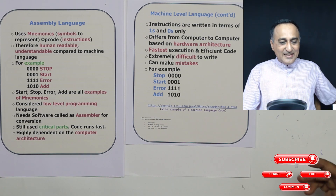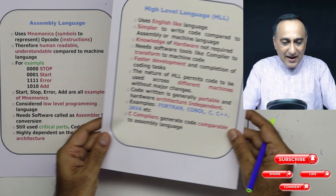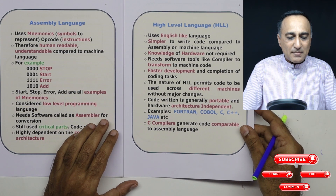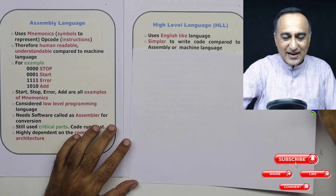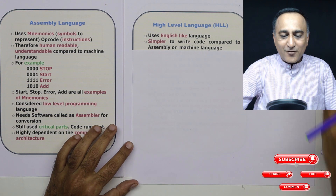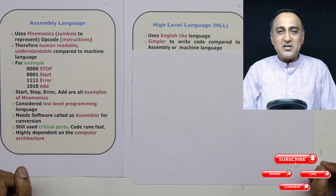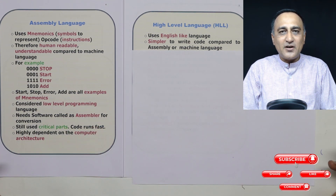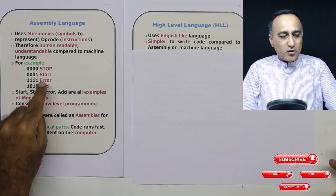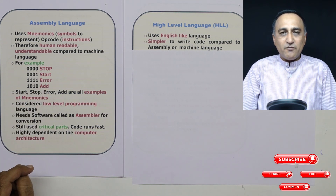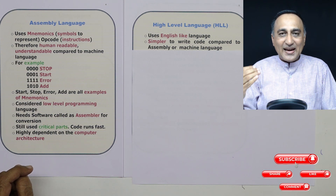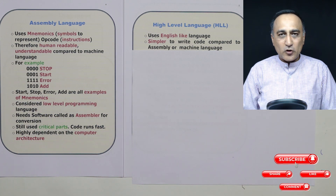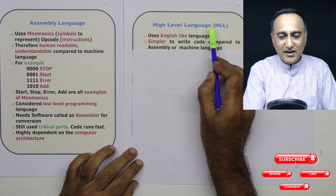Now let's take a look at the language we are going to study — the C programming language, or the high level language — and let's try to understand what a high level language is. If you looked at the previous languages, machine and assembly, it was obviously not fun working with zeros and ones or using codes like that. We would prefer a way of communication in an English-like language, and that English-like way of talking to a computer is known as a high level language.